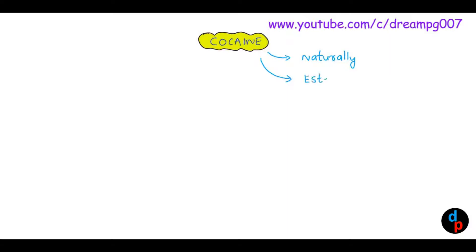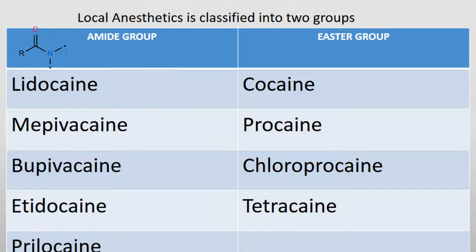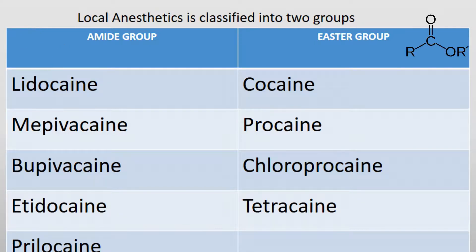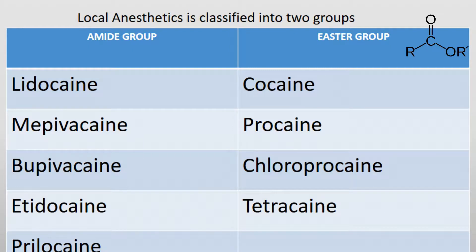Local anesthetics are classified into two groups based on the presence of an amide group or an ester group. Important amide group local anesthetics are lidocaine, mepivacaine, bupivacaine, etidocaine, and prilocaine. Whereas important ester group local anesthetics are cocaine, procaine, chlorprocaine, and tetracaine.